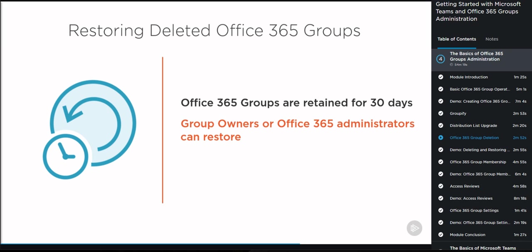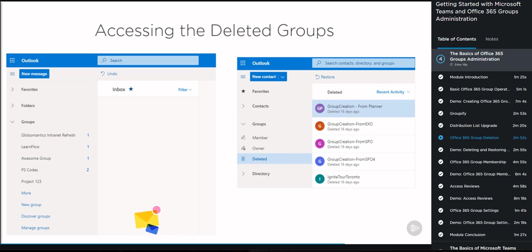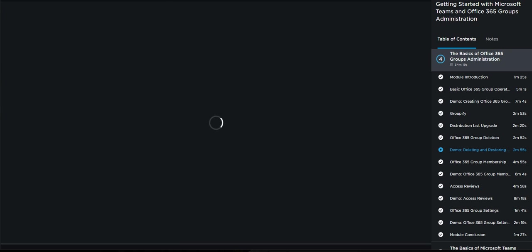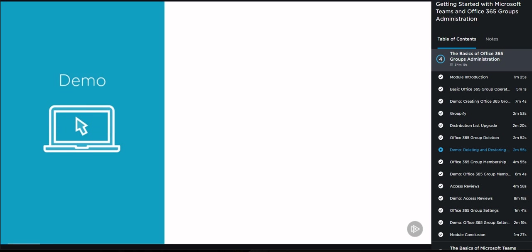Now that we have seen the theory, let's go into the lab and see how we can delete an Office 365 Group and then restore a deleted one. We are now in the lab environment — I'll open up the browser and go to Outlook, scroll down to the Groups category. Let's take the GlobalMantix Internet Refresh group. In order to delete it, we go into Settings, then Edit Group, and at the bottom we have the Delete Group button. It will give me a warning that I'm about to delete the group GlobalMantix Internet Refresh — make sure you back up all your files, including conversations, files in SharePoint, the group notebook, and the primary site. I will say that I understand and click Delete.